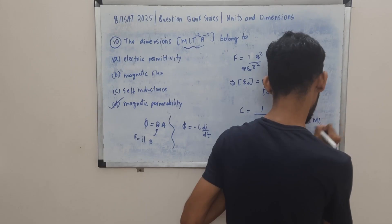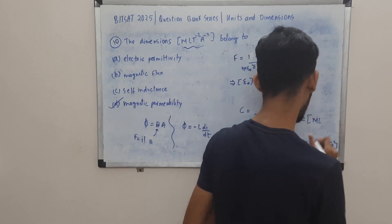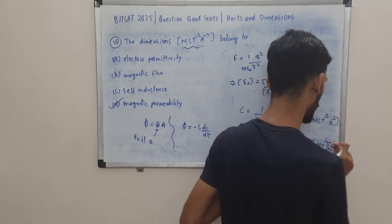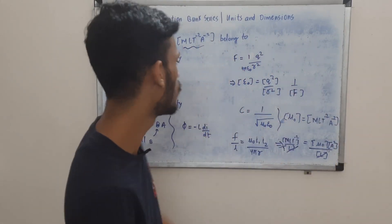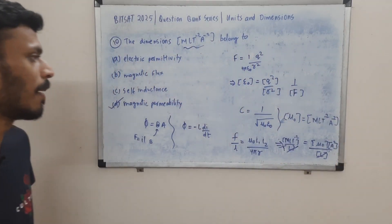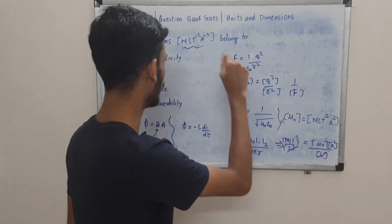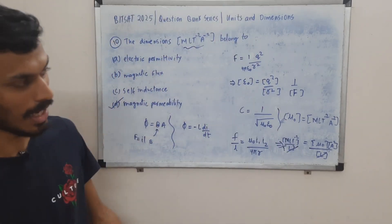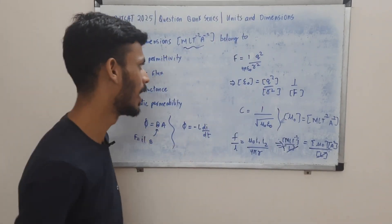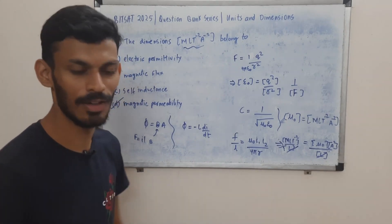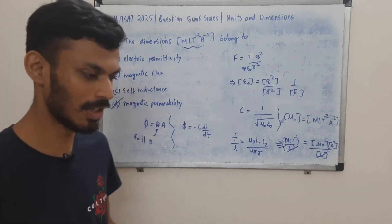So magnetic permeability μ₀ has dimensions MLT⁻²A⁻², which is M·L·T⁻²·A⁻² — that's the final question for the day. Remember that the formula F/l = μ₀·I₁·I₂/(2πr) is one of the easier ways to derive the dimensions of μ₀ without needing to go through ε₀ first.